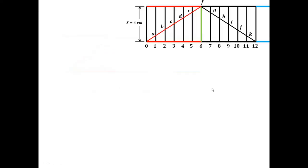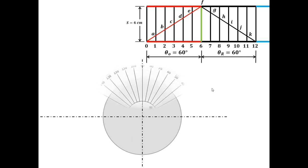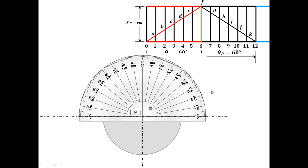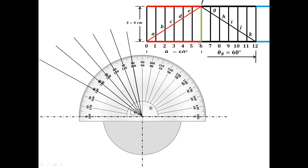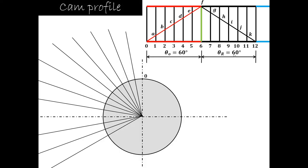Now let us start with the first case: the inline knife edge follower. We draw the center line and then the base circle of minimum radius 43 mm or 4.3 cm. The out stroke is 60 degrees, divided into 6 equal parts of 10 degrees each on the displacement diagram. Similarly, the return stroke is also 60 degrees divided into 6 parts of 10 degrees each, giving a total of 120 degrees or 12 equal parts. As shown, we mark 12 equal parts of 10 degrees each — 60 degrees for out stroke and 60 degrees for return stroke.